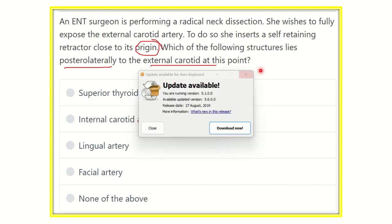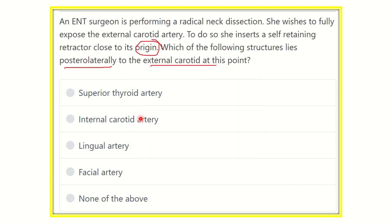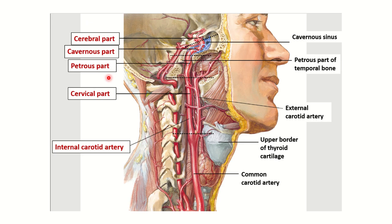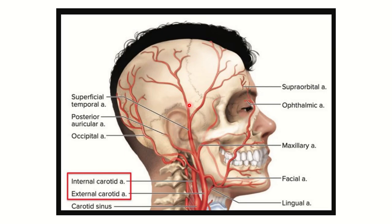So, we have to find the artery which is located posteriorly and laterally when the external carotid artery originates. Here we can see the different structures at the neck. This is the common carotid artery, which bifurcates into the external carotid artery and the internal carotid artery. Just posteriorly to the external carotid artery, there is the internal carotid artery.